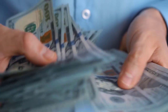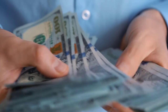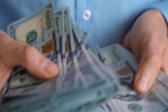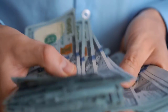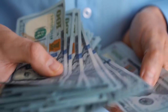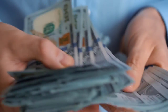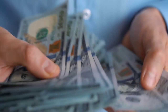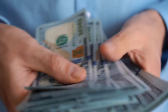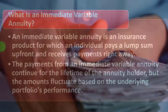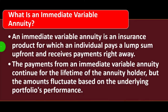From an investment, retirement, or insurance strategy perspective, the idea is: I'm going to put this lump sum of money down so I can receive a series of payments in the future. I'm going to start receiving those payments immediately, and they're going to be variable payments. The payments from an immediate variable annuity continue for the lifetime of the annuity holder.